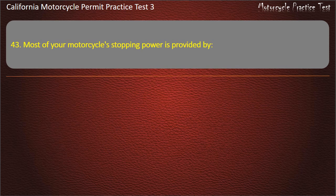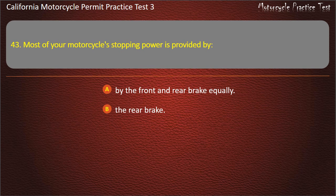Question 43. Most of your motorcycle's stopping power is provided by: the front and rear brake equally, the rear brake, the front brake, or the clutch. Answer: The front brake.